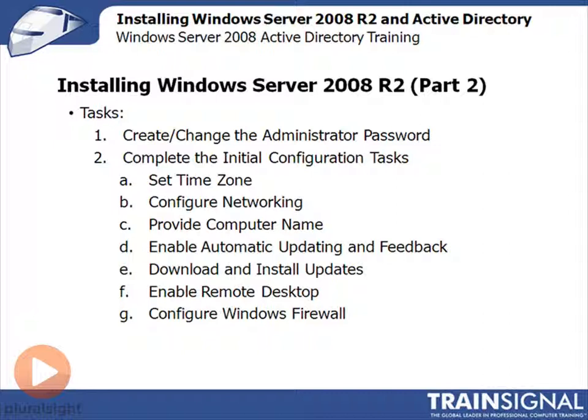Once complete, you'll be prompted to create or change the administrator password. Then you'll need to go through and complete the initial configuration tasks, which is a utility that pops on screen automatically. Tasks include setting your time zone, configuring networking such as giving it an IP address and a computer name, deciding whether to enable automatic updates and feedback, and downloading and installing the latest updates — always a very good idea. A couple of extras we'll also handle are enabling Remote Desktop and configuring Windows Firewall.